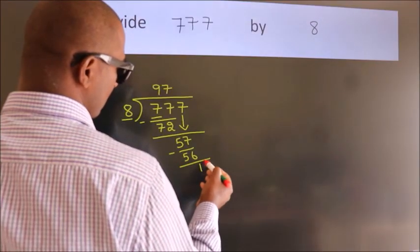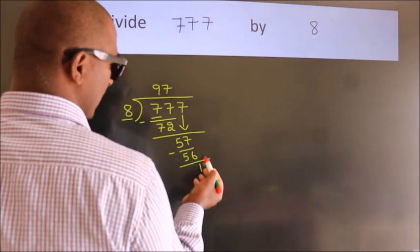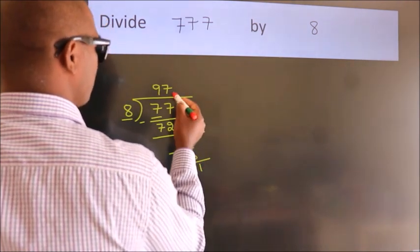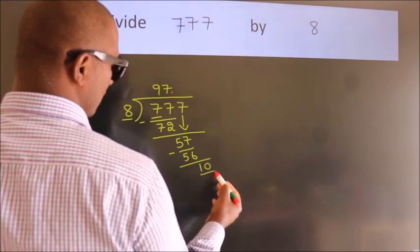After this, no more numbers to bring it down. So what we do is we put a dot and take 0. So 10.